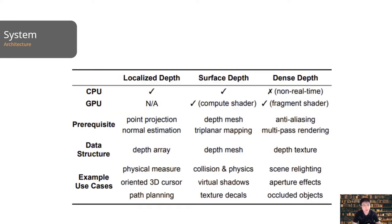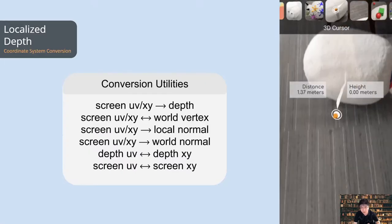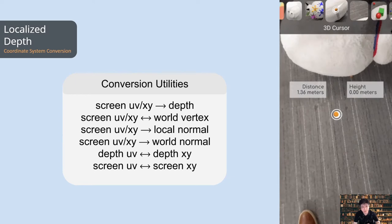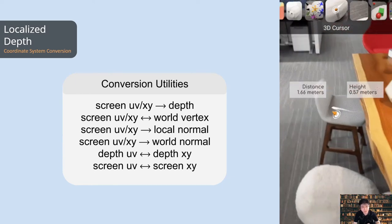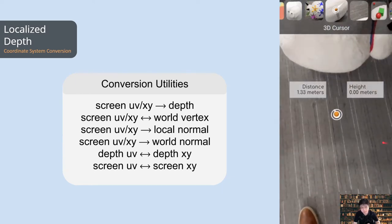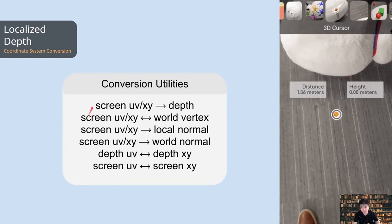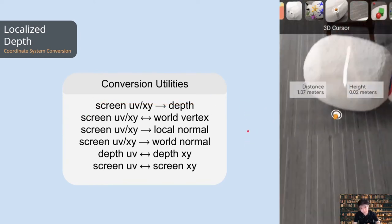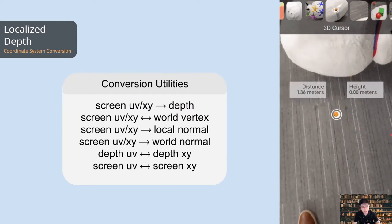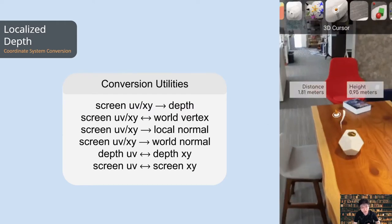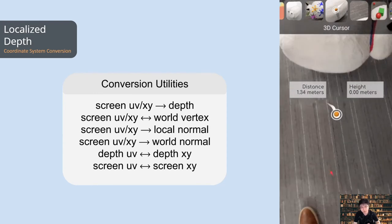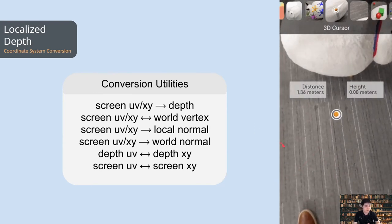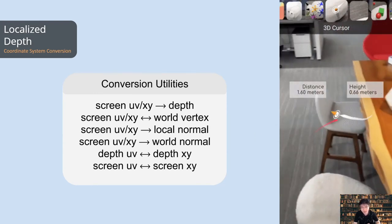Based on these data structures, we classify our DepthLab components into three categories: localized depth, surface depth, and dense depth. Localized depth uses the depth array to operate on a small number of points directly on the CPU. For example, by converting between screen space and world space, DepthLab provides a 3D-oriented cursor that orients according to the normal vector of the physical surface and details about its distance to the ground and to the camera.